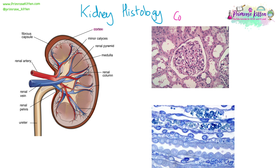In kidney histology, you need to recognize both the cortex and the medulla and structures inside them under the microscope. Let's start with the cortex — this is clearly the cortex because it contains a glomerulus, which is that bundle of capillaries visible in the center. Then you've got this white space around it, which is the Bowman's capsule.